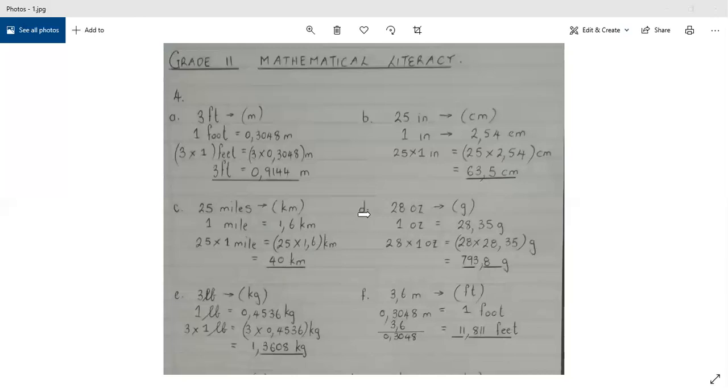Question 4d, 28 ounces converted to grams. Given 1 ounce equals 28.35 grams. Therefore 28 ounces equals 28 multiplied by 28.35 grams, which is 793.8 grams.